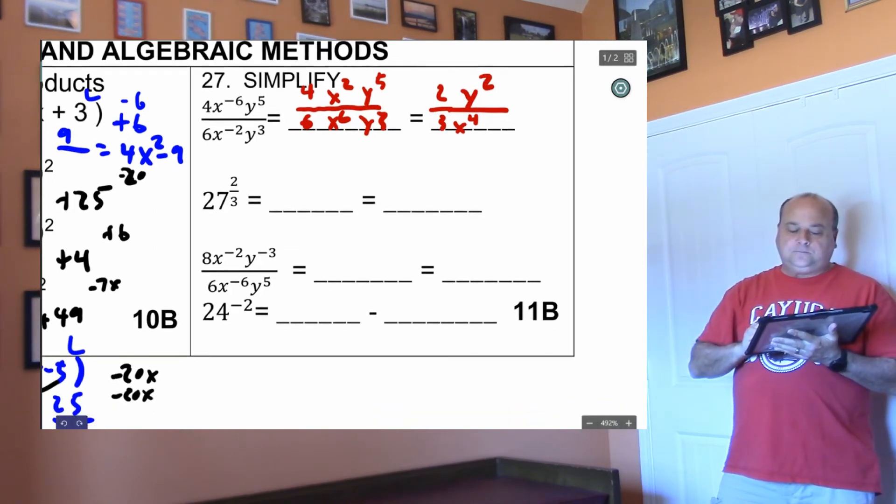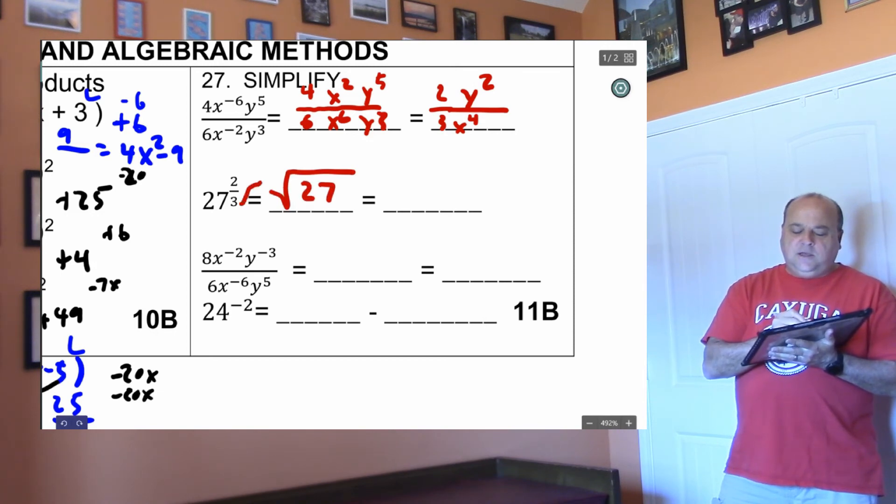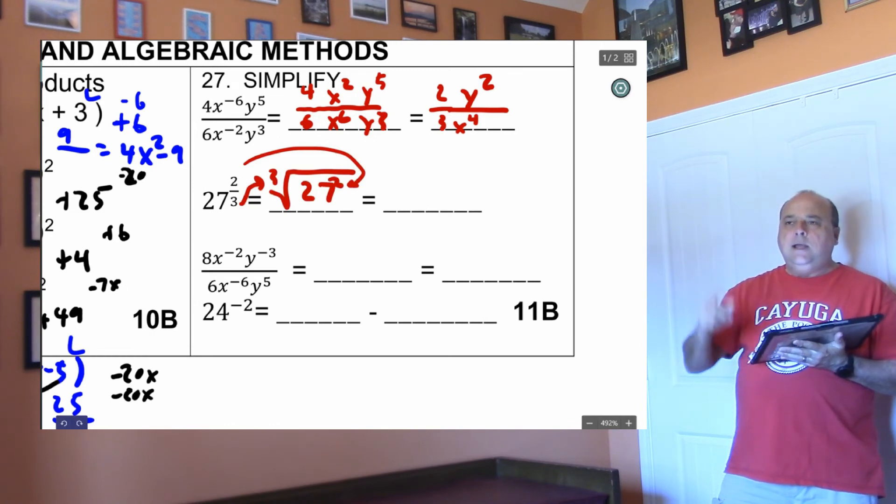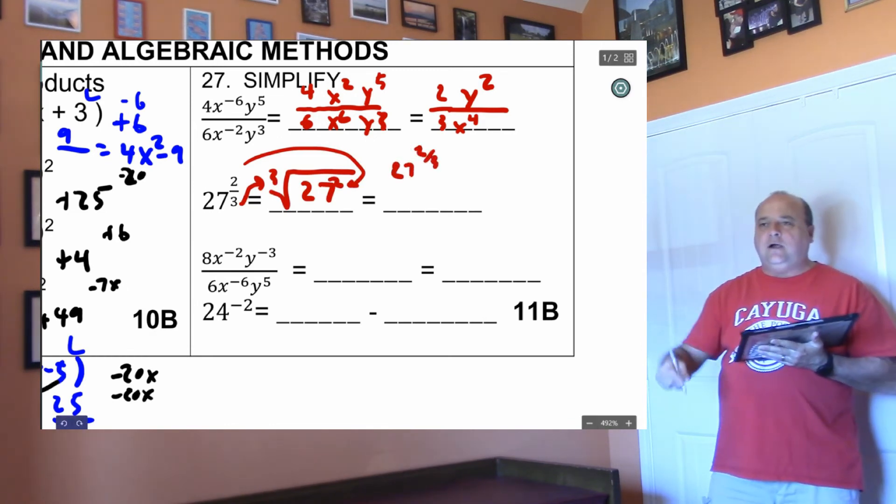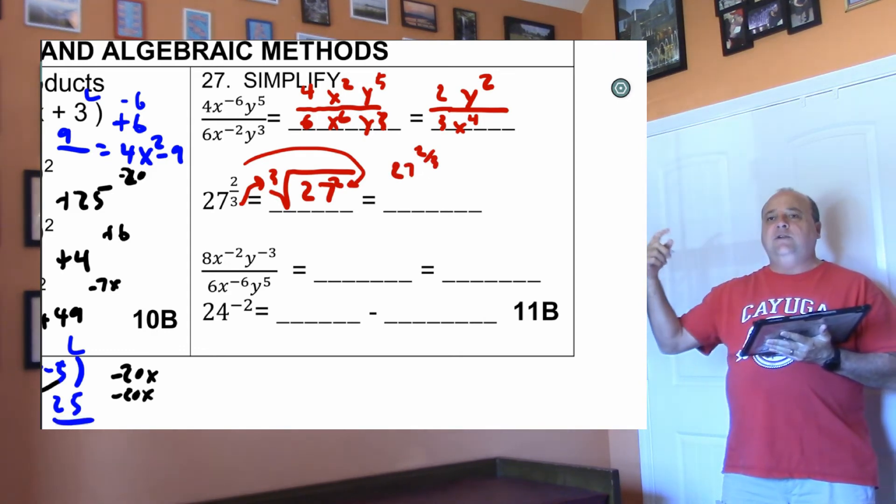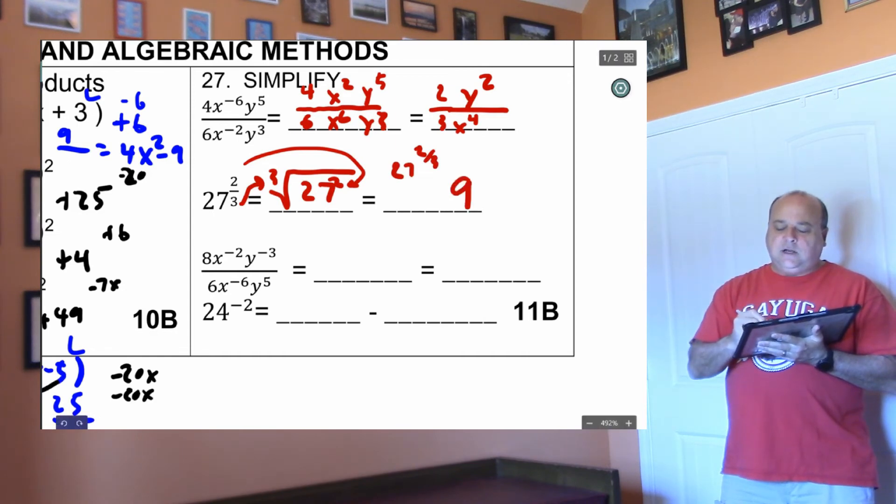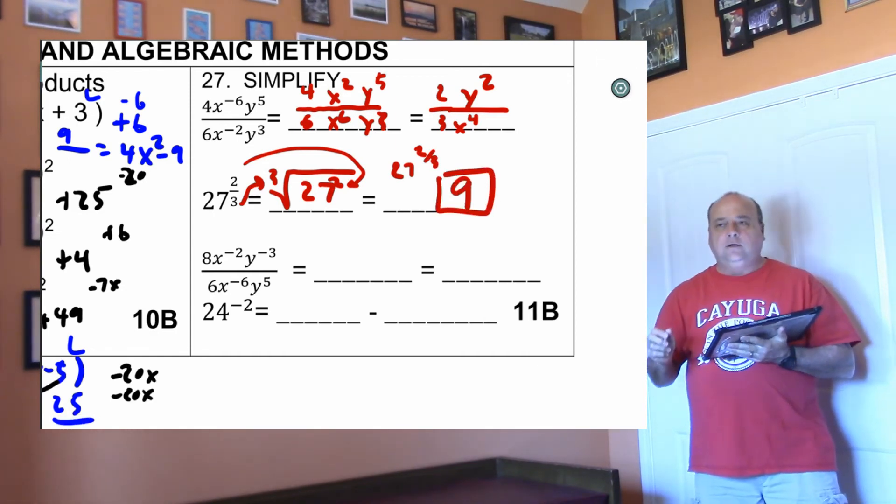On the next problem. Draw the square root. The 27 goes in. This turns into the number in front, and this is your power. Now then, if you were to just type in 27 to the 2 thirds on the calculator, it will give you the answer. The cubed root of 27 is 3, and 3 squared is 9. So this is going to end up being 9. And just plug it into the calculator.